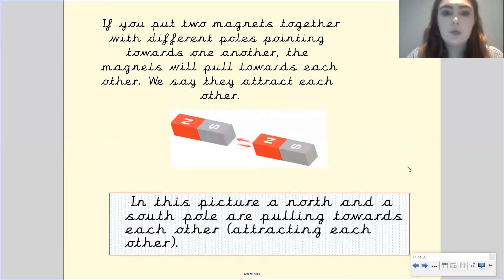If you put two magnets together with different poles pointing towards one another the magnets will pull towards each other and we say they attract one another. So if I get my north pole and my south pole and I push them together they attract one another. In this picture a north and a south pole are pulling towards each other they're attracting each other and we can see that because the arrows are pointing towards one another to say that they're being pulled together.